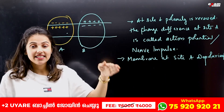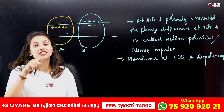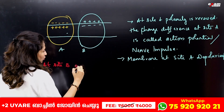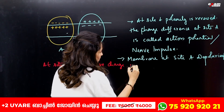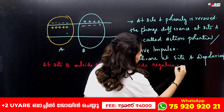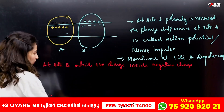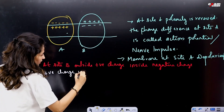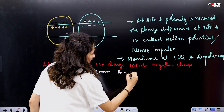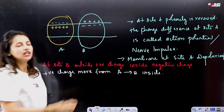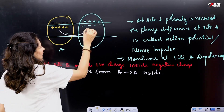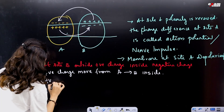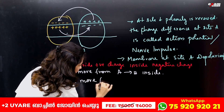Because of the charge difference, positive charges move from B to A on the inside, and from A to B on the outside. This local current flow causes the membrane at site B to become depolarized in turn, as positive charges now enter site B and the polarity reverses there.